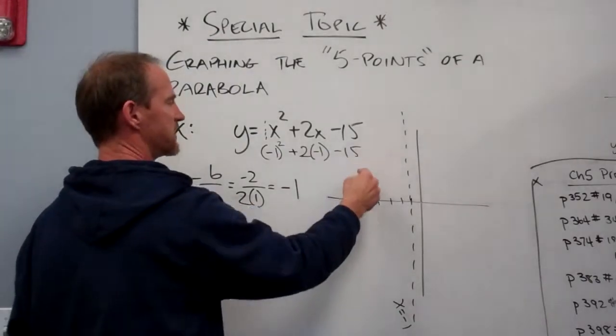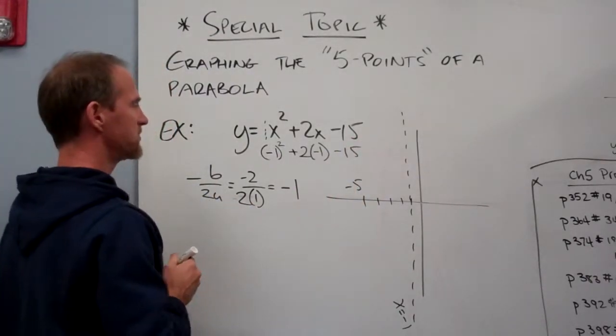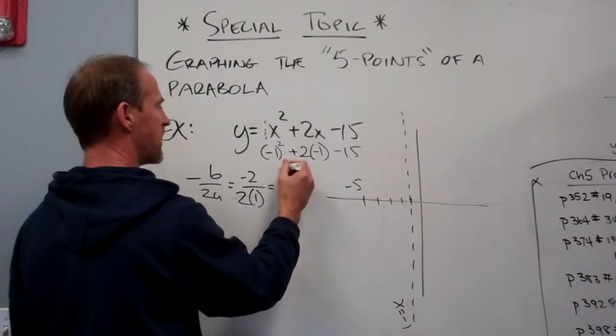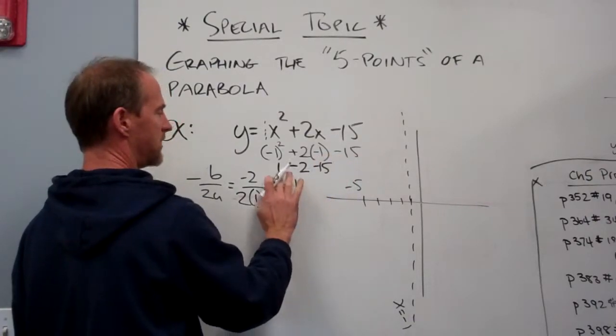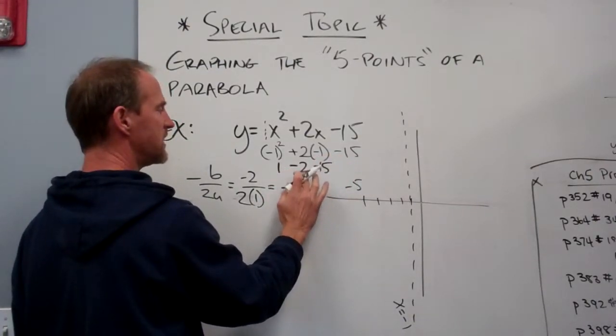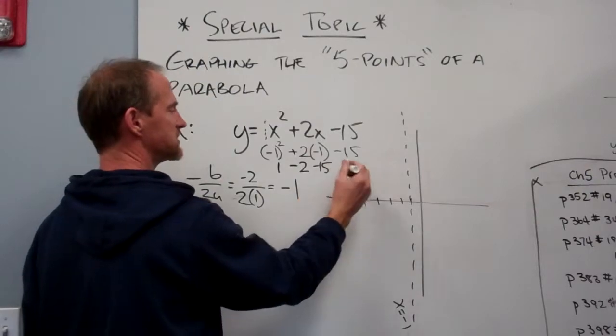Every once in a while, people somehow think they have to put in a negative 1, but they don't. There's no x there. This then is positive 1 minus 2 minus 15. And 1 minus 2 is negative 1, negative 1 minus 15 is negative 16.